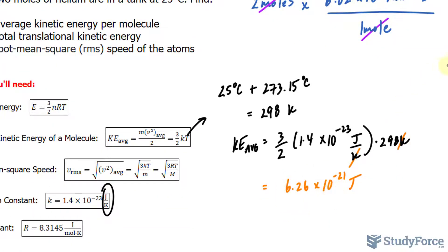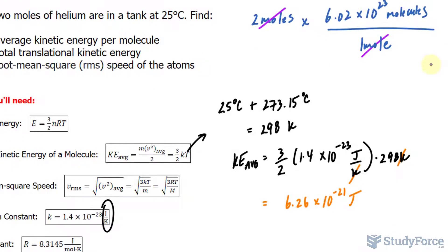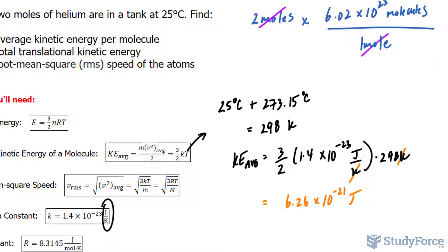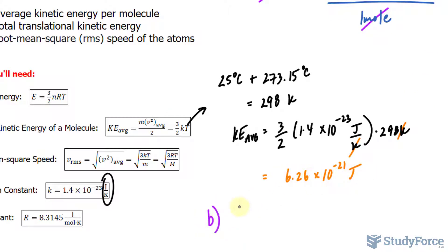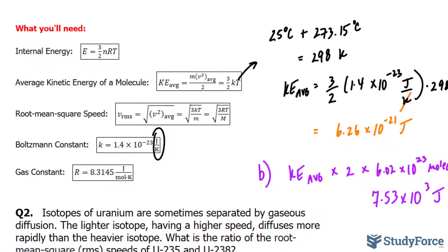Notice how the units cancel out. Technically, by taking this value and multiplying it by 2 times 6.02 times 10 to the power of 23, we get the total transitional kinetic energy. Let's go ahead and do that. So this value, average, multiply 2, 2 times 6.02 times 10 to the power of 23 molecules. If you do that correctly, you should get a value of 7,537. Rounding that to three significant figures, that's 7.53 times 10 to the power of 3.